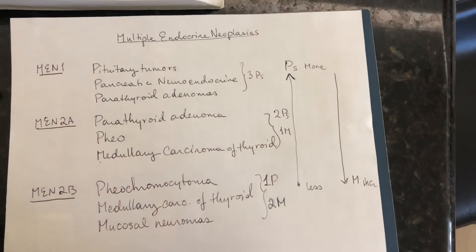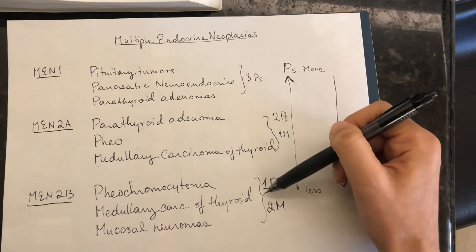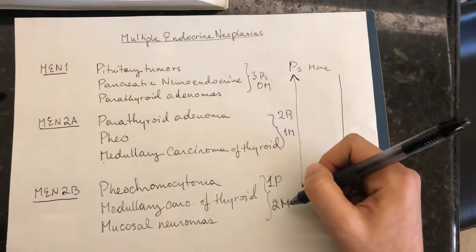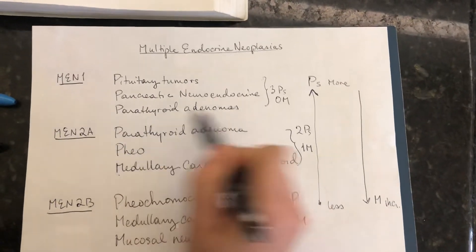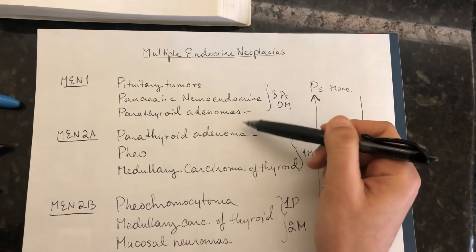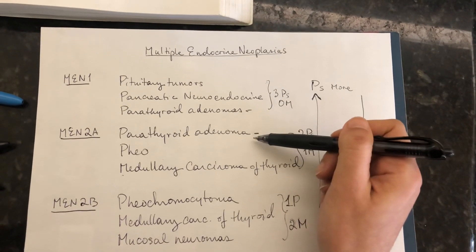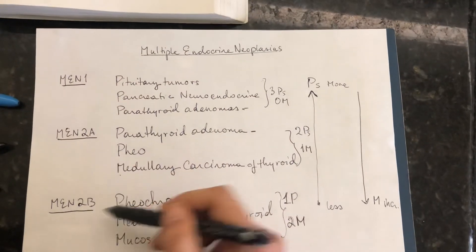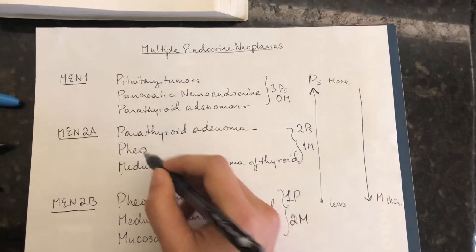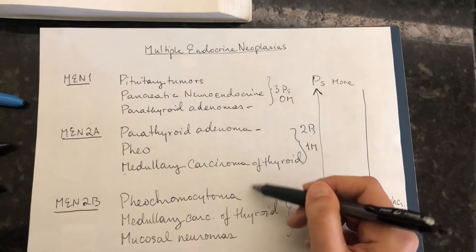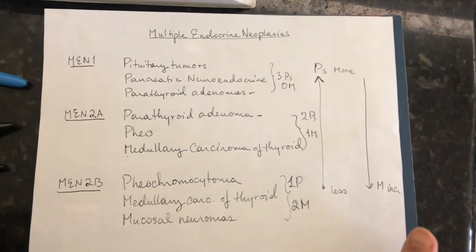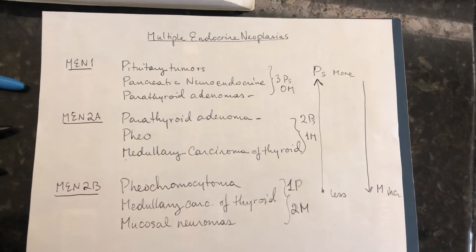So the pattern is: three P's, two P's, one P — and zero M's, one M, two M's. MEN 1 and 2A both share the parathyroid adenoma, and MEN 2A and 2B both share the pheochromocytoma and medullary carcinoma of the thyroid. I hope that mnemonic helps!